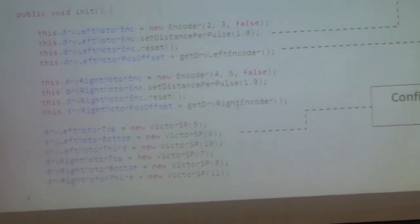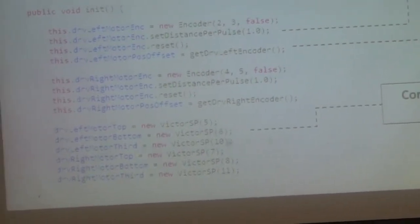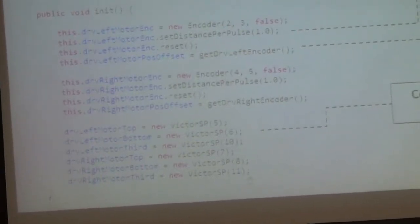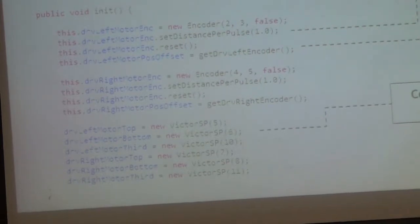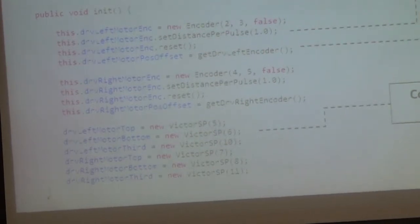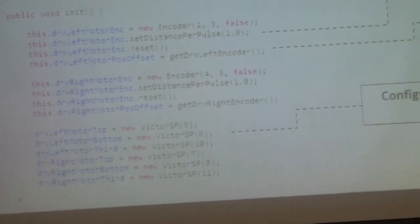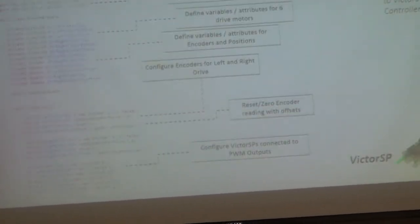When initializing Victors, you create encoder objects, set the distances per pulse, and reset the encoders. You also create a variable to capture the current position as an offset so you can zero it out. Then you instantiate the Victors: left motors on PWM ports 5, 6, and 10; right motors on 7, 8, and 11. Those numbers correspond to PWM ports on the roboRIO, with 10 and 11 using the expansion port added by the NavX.